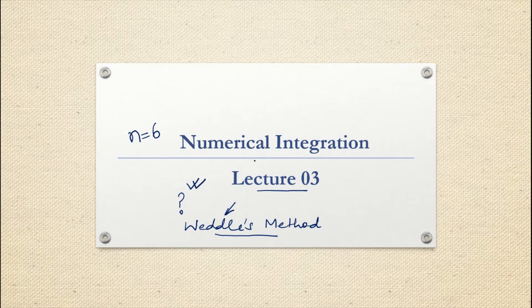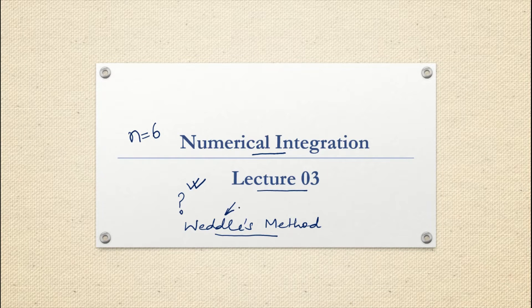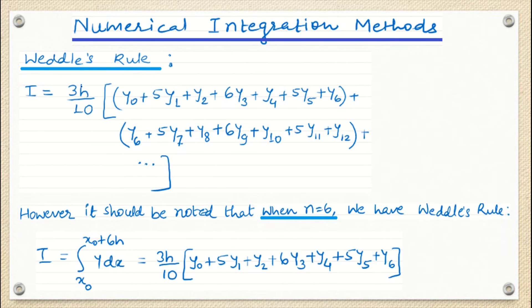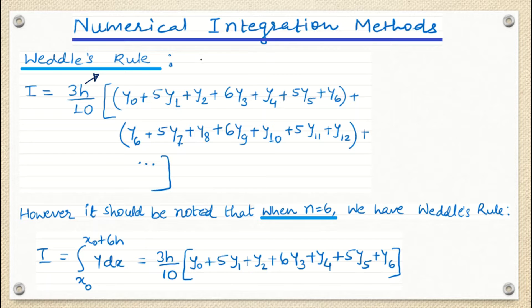Since we have covered enough theory behind numerical integration — the concept and the reason — today for Weddle's method we will directly start with a question and see the formula. The formula says that the integral I equals three-tenths times H. What is H? H is the length of each and every equal partition.